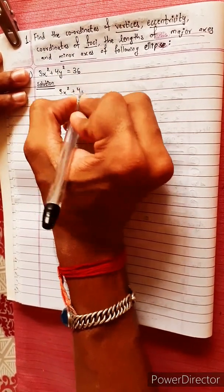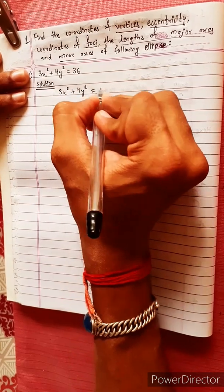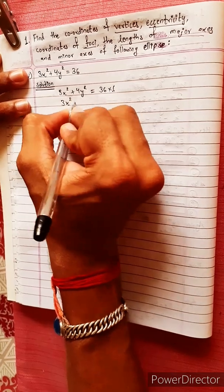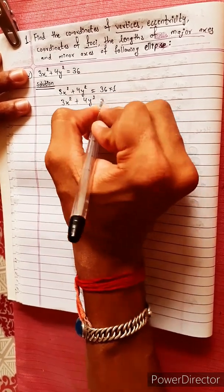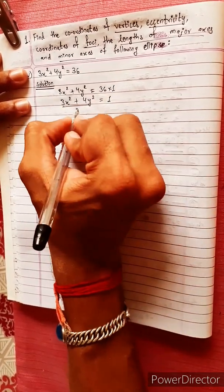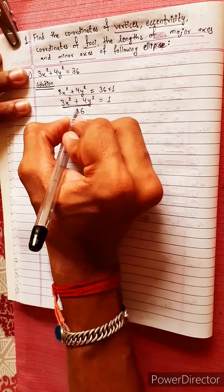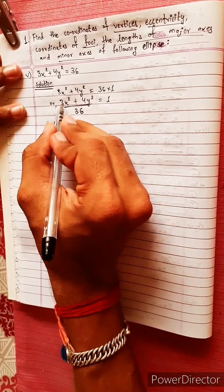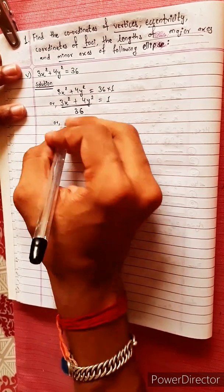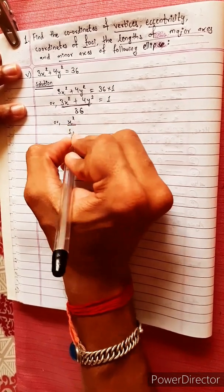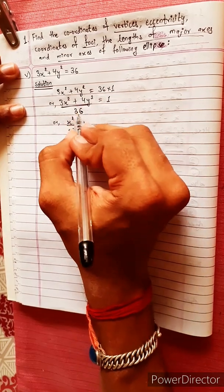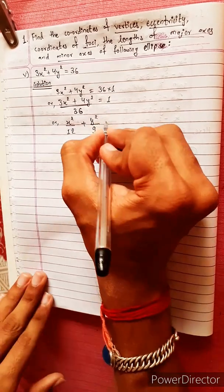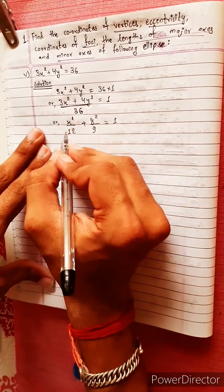Given: 3x² plus 4y² equals 36. Dividing both sides by 36: 3x²/36 plus 4y²/36 equals 1, which simplifies to x²/12 plus y²/9 equals 1.